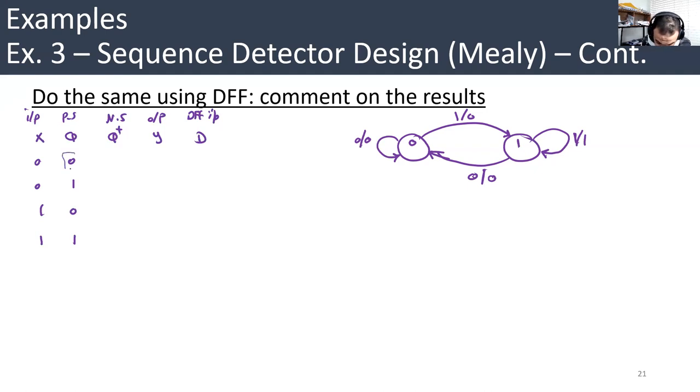First, if the current state is 0 and the input is 0, we're going to stay in the same state and the output will be 0. If the state is 1 and the input X is 0, we're going to go back to state 0 and the output will be 0. If we are in state 0 but we received 1, we're going to go to the next state, which is 1, and the output will be 0. But if we are in state 1 and we received 1, that means we're going to stay in the same state 1, and the output will be 1.